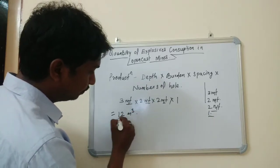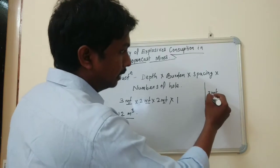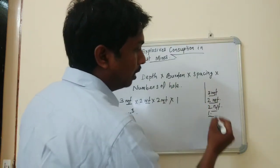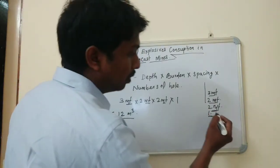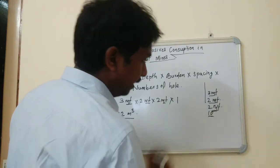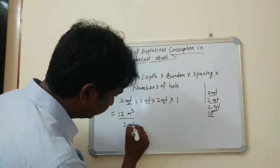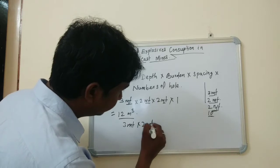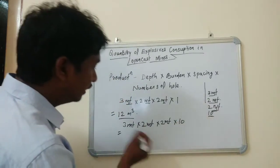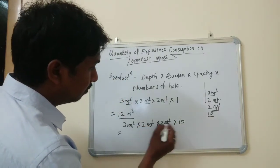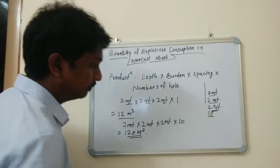So 12 cubic meters of production for 1 hole with 3 meter depth, 2 meter burden, and 2 meter spacing. Now suppose the number of holes is 10, then 3 × 2 × 2 × 10 equals 120 cubic meters of production.